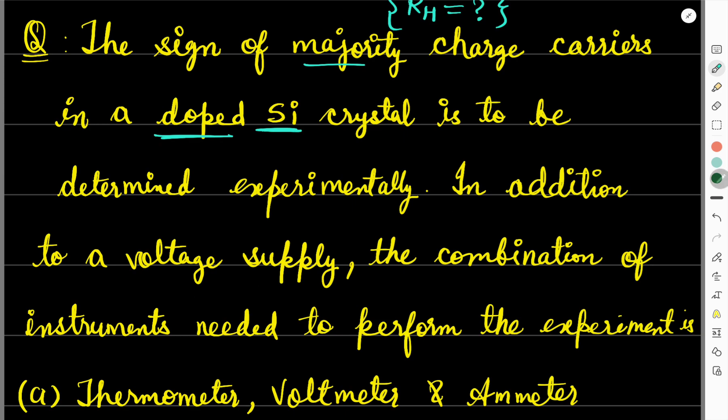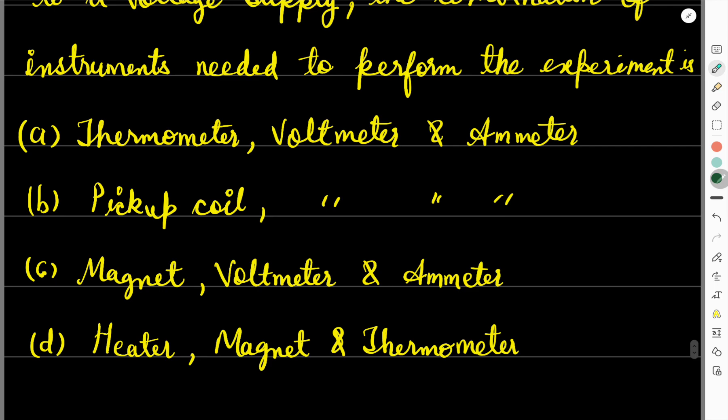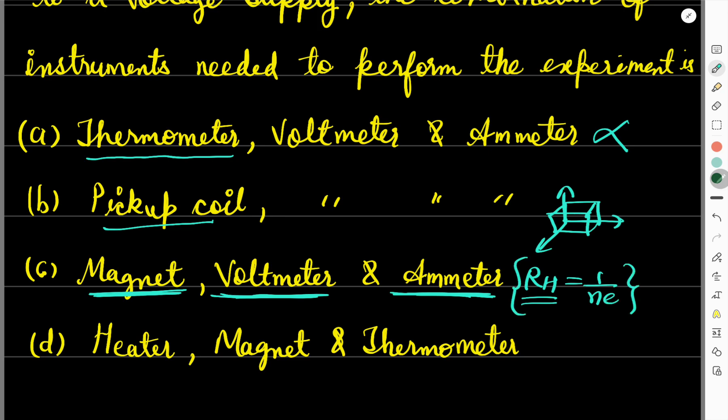So here the question is related to Hall coefficient. So in addition to a voltage supply, the combination of instruments needed to perform the experiment is - the experiment we need to do is the Hall effect experiment, through which we find the Hall coefficient. So see the options. Thermometer is not needed, so that option is discarded. When we do Hall effect, what happens is that there is a conductor, conducting material we have. On one side we flow current through it. On one side we apply magnetic field, and charge separation occurs, Hall voltage develops, and through this we measure voltage and calculate Hall coefficient. We don't need a pickup coil either. We need a magnet to develop magnetic field, voltmeter and ammeter so that we can measure voltage and current, through which we can measure Hall coefficient.